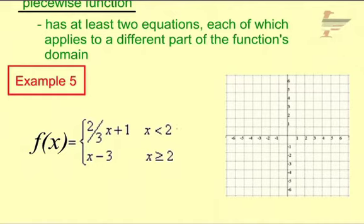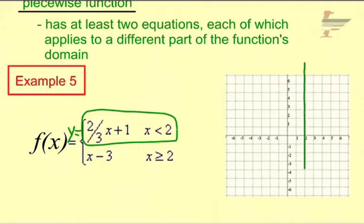So we are going to graph y equals two-thirds x plus 1 for all the x's that are less than 2. If I look at my graph where the x's are less than 2, I'm going to lightly put in a vertical line right here. Where the x's are less than 2 is everything to the left of this line. So I want to draw the graph two-thirds x plus 1 to the left of that line.